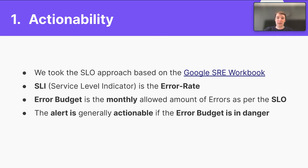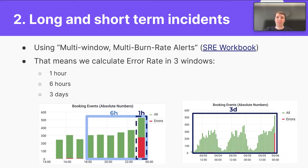To solve the first requirement — actionability — we took the SLO approach based on the Google SRE workbook. The SLI in our case is the error rate, and the error budget is the monthly amount of errors as per the SLO. We say that the alert is generally actionable if the error budget is in danger. The second requirement, capturing long-term and short-term incidents, was solved by using multi-window, multi-burn rate alerts.